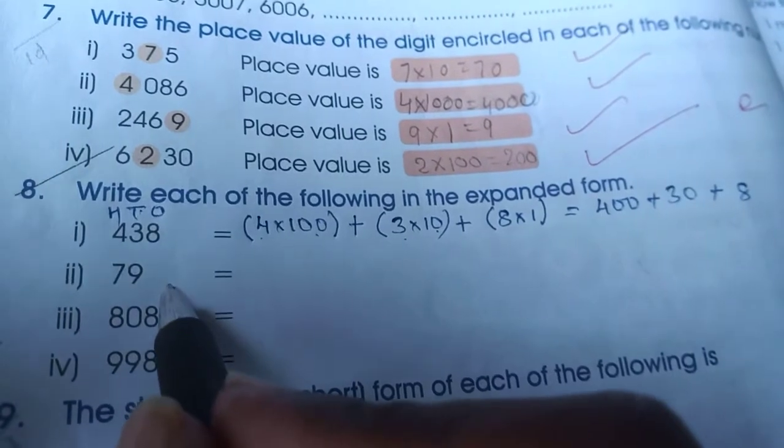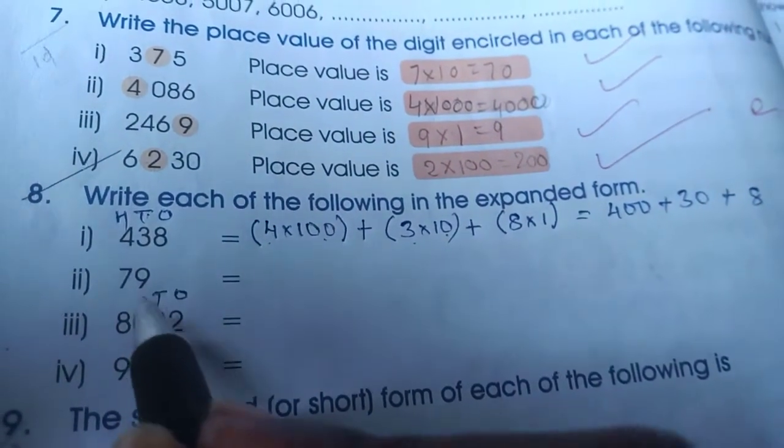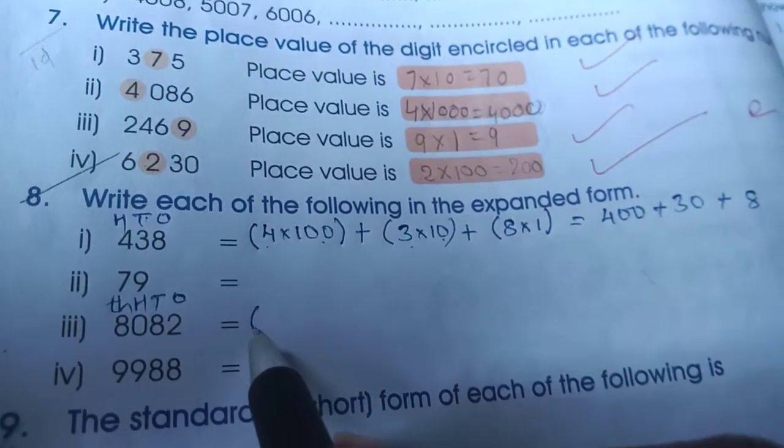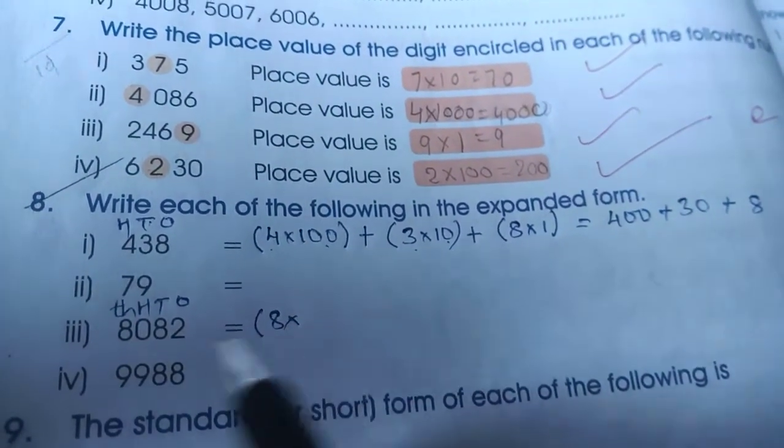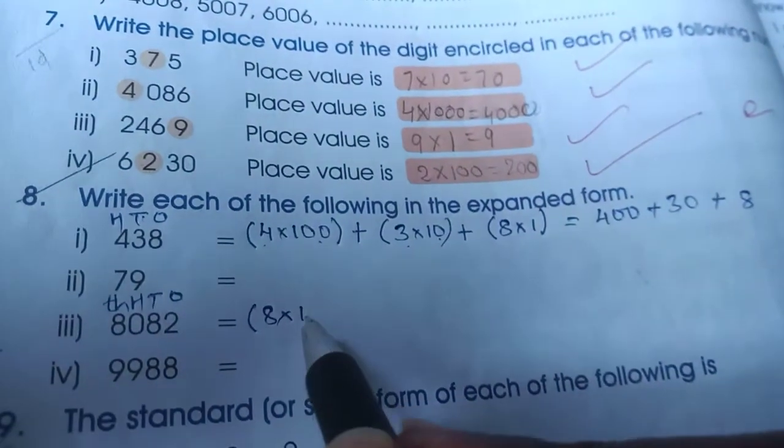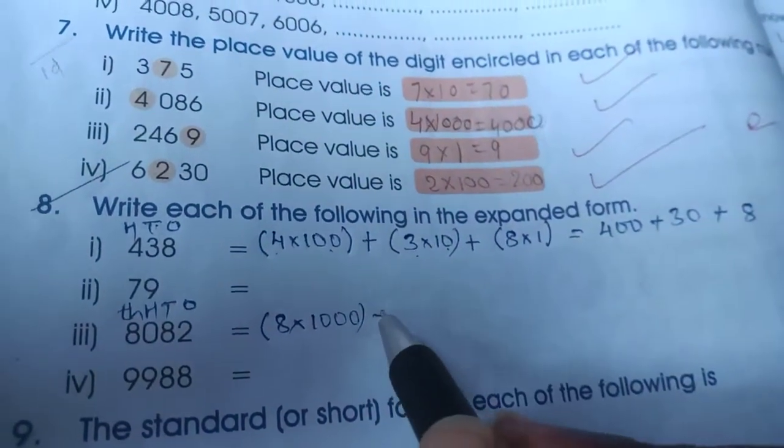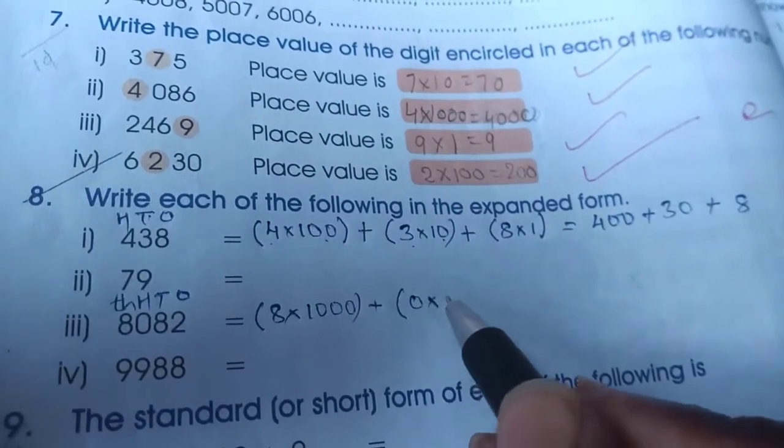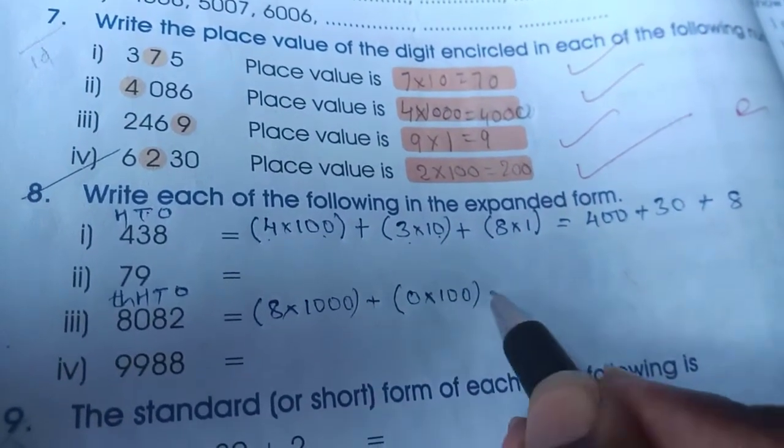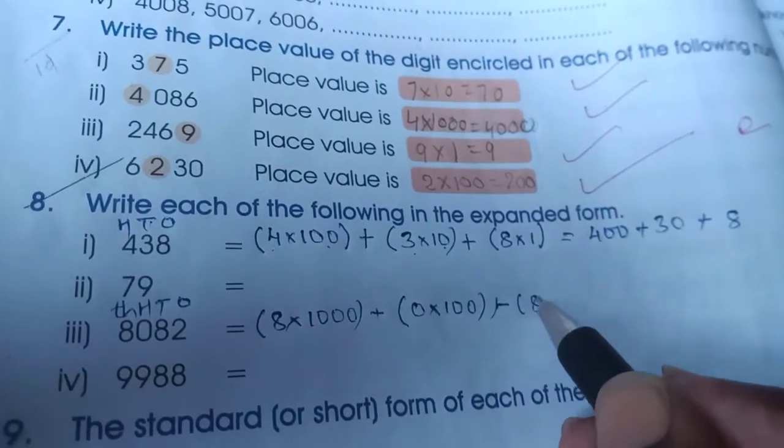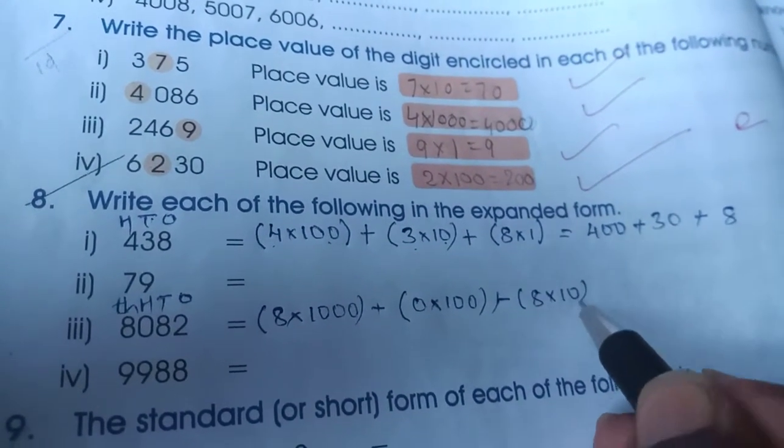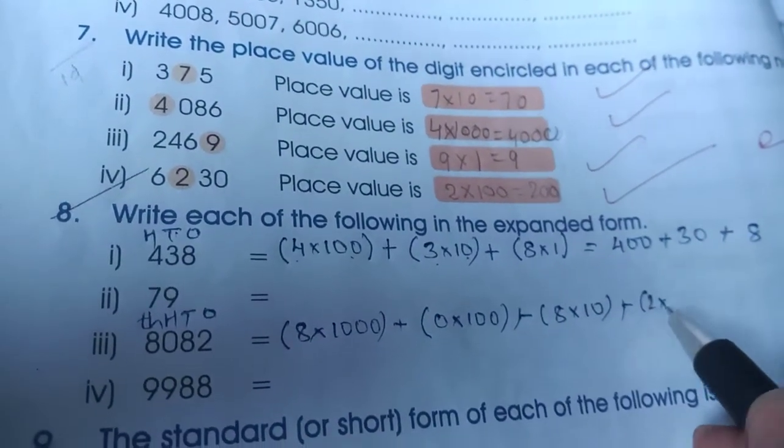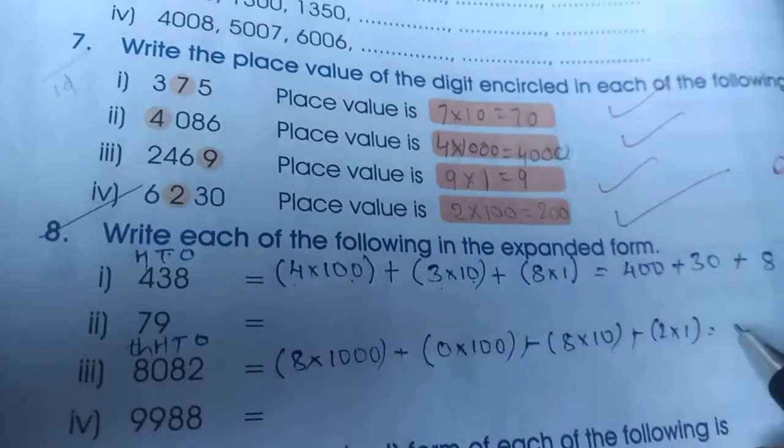Now let me solve this problem: ones, tens, hundreds, thousands. 8 is in thousands place, that is 8 into 1000, plus 0 is in 100 place, that is 0 into 100, plus 8 is in tens place, that is 8 into 10, plus 2 is in ones place, that is 2 into 1. 8 into 1000.